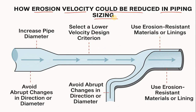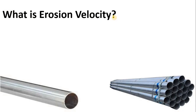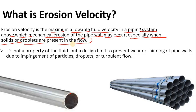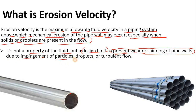First of all, we will discuss what is erosional velocity and why we study it and consider it important. Erosional velocity is the maximum allowable fluid velocity in a piping system above which mechanical erosion of the pipe wall — the internal wall — may occur, especially when solids or droplets are present in the flow. Please note that it is not a property of the fluid but a design limit as per the design code, to prevent wear or thinning of pipe walls — otherwise the pipe could be ruptured due to impingement of particles, droplets, or turbulent flow.